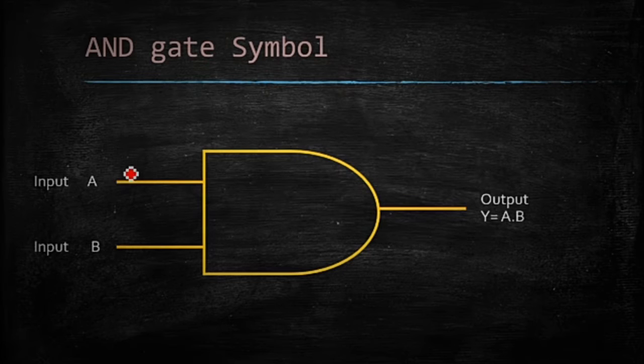Symbol of AND gate. When two inputs are there, A and B are the inputs, then output is Y equals A dot B.